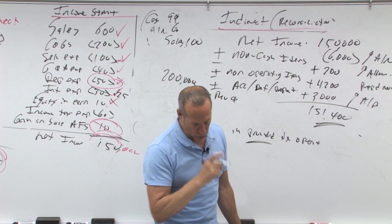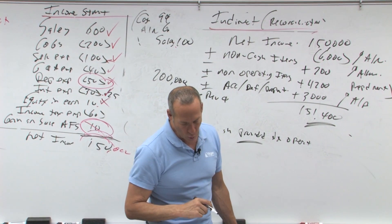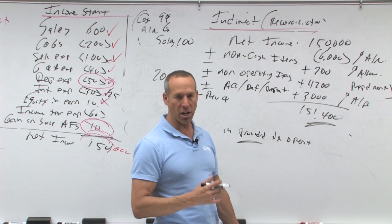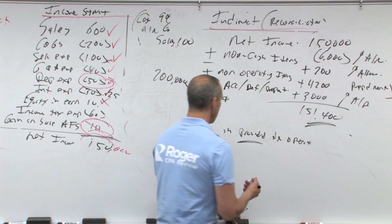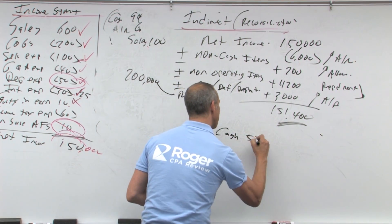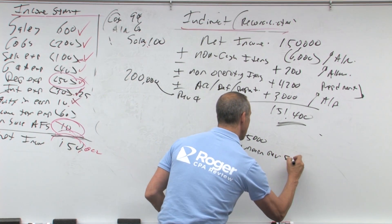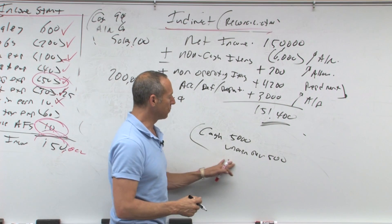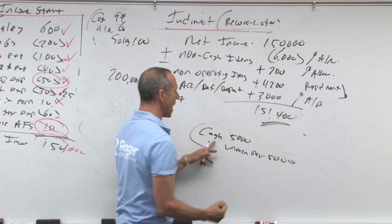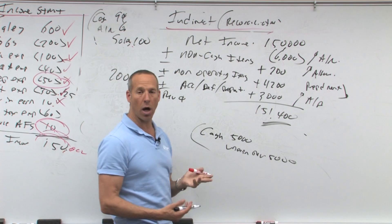We had $5,000 of unearned fees, so the $5,000 of unearned fees must have been what? It must have been debit cash $5,000, credit unearned revenue, so that would be a liability. This is a liability, this is cash, so that means part of this cash was what?